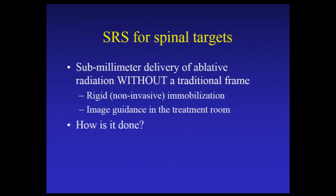How about for spinal targets? We can't use the gamma knife to treat spinal targets in the mobile spine — in the thoracic, lumbar, or sacrum. So how do we deliver ablative doses of radiation with sub-millimeter accuracy without a traditional frame for immobilization? This technique has developed over the past 15 years and involves rigid immobilization and image guidance — using CT scans and x-ray technology in the treatment room just prior to radiation delivery to ensure the patient is lined up with sub-millimeter accuracy.